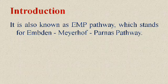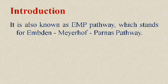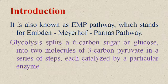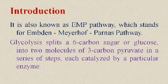Glycolysis is also known as the EMP pathway, which stands for the names of scientists — Embden, Meyerhof, and Parnas pathway. In glycolysis, there occurs splitting of a six-carbon sugar or glucose molecule into two molecules of three-carbon pyruvate in a series of steps. There are approximately 10 reactions, each catalyzed by a particular enzyme, and the process occurs inside the cell cytoplasm.